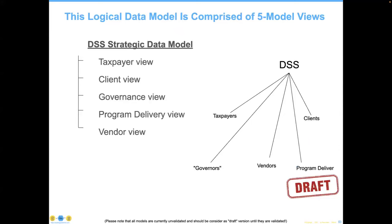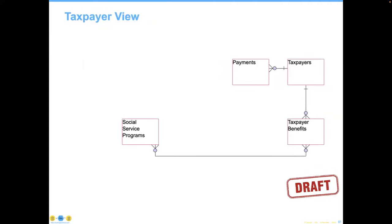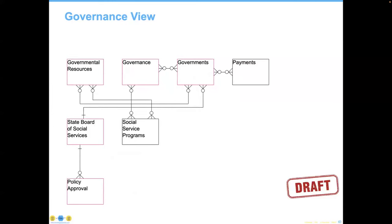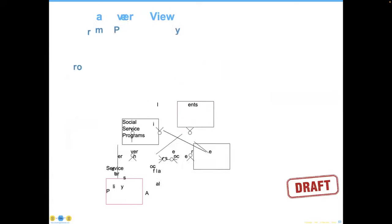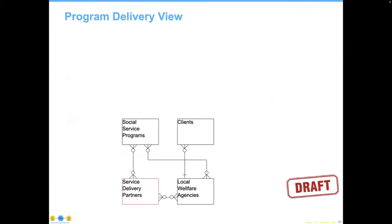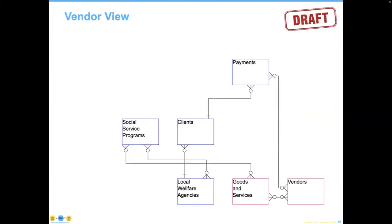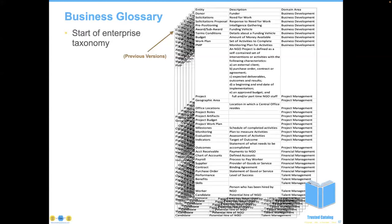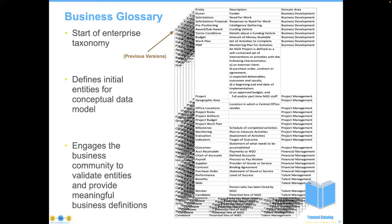Here's a specific logical data model composed of five different views for a state agency. They had a taxpayer view, a governor view, a vendor view, a program delivery view, and a client view. In the taxpayer view, they were concerned with certain entities and how those entities related. In the client view, clients looked at the same things but their payments were different. The governance view was more complex — no surprise given a state government example. The program delivery view covered social service programs and partners delivering for local welfare agencies. The vendor view supplied subcontractors within this larger conceptual data model.